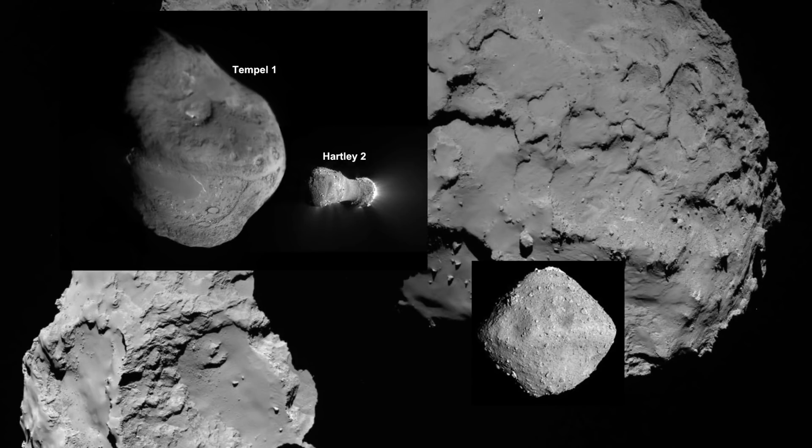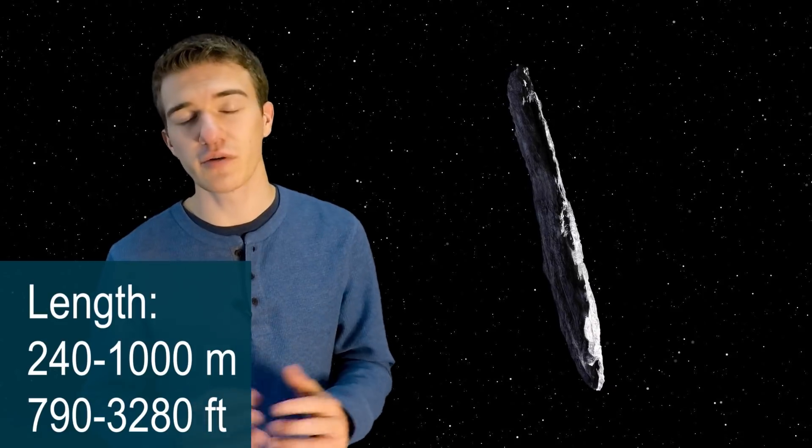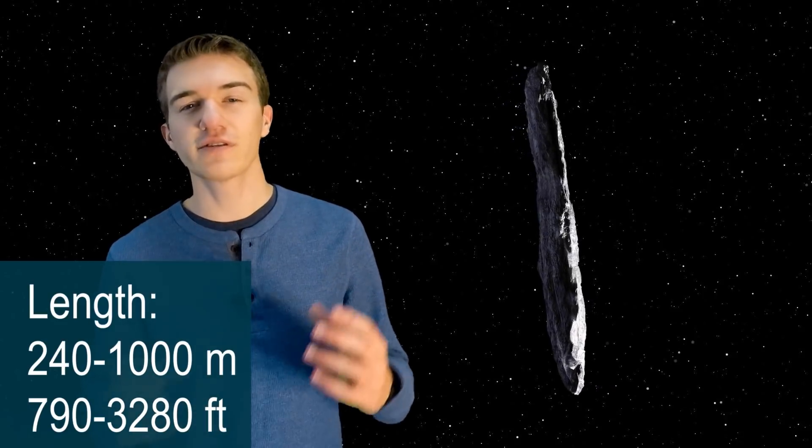Now, other than just the ratio of Oumuamua between its different sides, they also predicted that it could be anywhere in length from 240 meters to 1000 meters. Therefore, there's still a lot of information we don't necessarily know about it. But we were able to observe the object in other light spectrums to try and understand what the composition could be made of. And one of the earliest things we found was that it's a dark reddish color, which usually relates to metals, meaning that this thing could be pretty heavy.